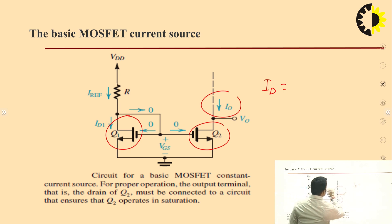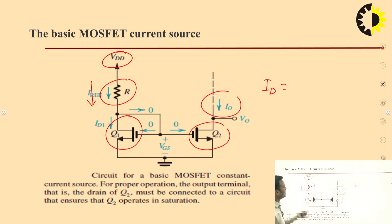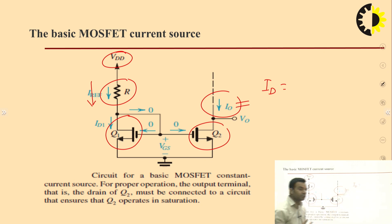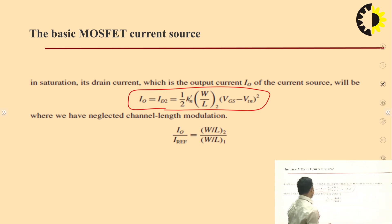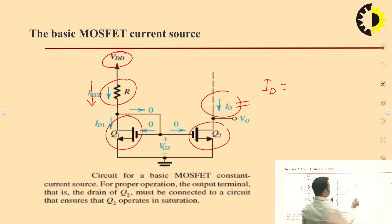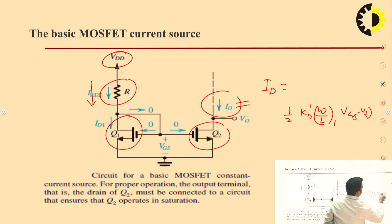We are considering that output current is flowing here. We have taken this reference resistor and the supply voltage V_DD, due to which some reference current is flowing here. Due to this reference current and this voltage, some current will flow at the drain of transistor Q2. We will derive the relationship between I_out and I_reference. The drain current for Q2 is half k_n(W/L)₁(V_GS minus V_T) whole squared.